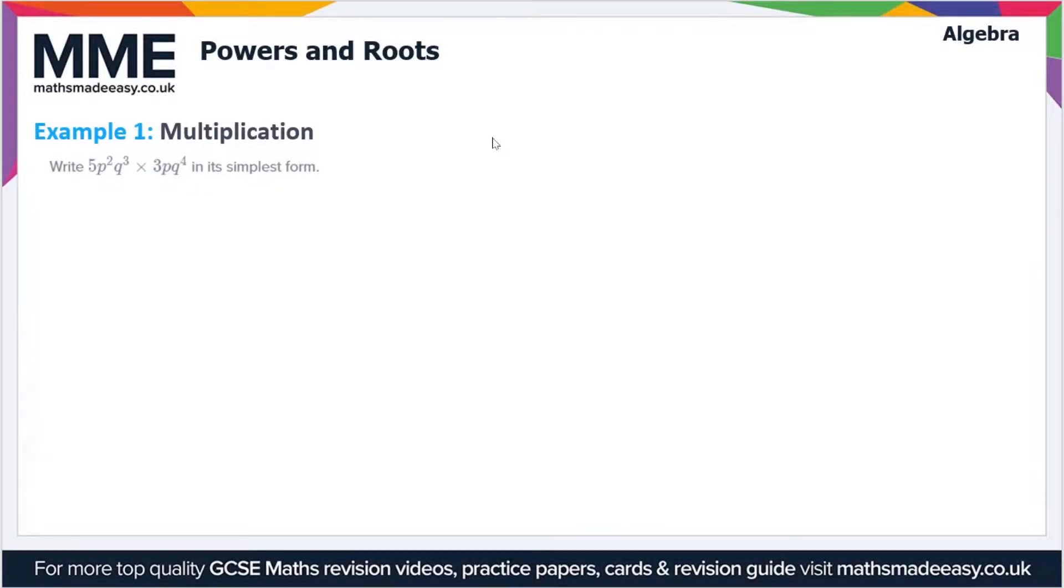Welcome to the Maths Made Easy tutorial on powers and roots. We're going to look at a couple of example questions in this video. Starting with example one, we have a multiplication where we have to write 5p²q³ times 3p³ to the 4 in its simplest form. Let's just rewrite the expression 5p²q³ times 3p³ to the power 4.